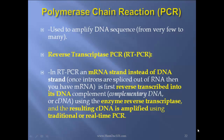Polymerase chain reaction is used to amplify a DNA sequence from few to many. What is reverse transcriptase PCR? In RT-PCR, an mRNA strand — not a DNA strand — is used as starting material. Remember, once the introns are spliced out of RNA, then you have mRNA. The mRNA strand is first transcribed into a DNA complement called cDNA using the enzyme reverse transcriptase, and then the resulting DNA is amplified using traditional or real-time PCR. Remember, this will not be the original DNA — it will be the DNA with all the introns spliced out.